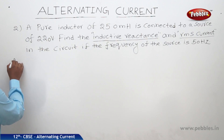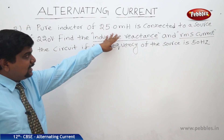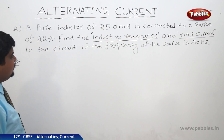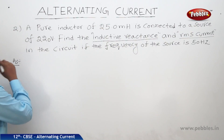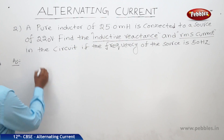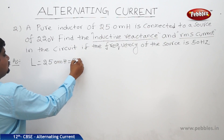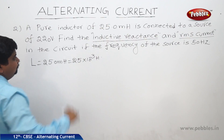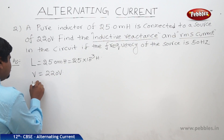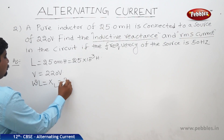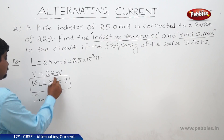Now we will look at a problem related to inductors. A pure inductor of 25 millihenry — that is 25 × 10⁻³ H — is connected to a source of 220 volts. We need to find the inductive reactance XL = ωL and the RMS current in the circuit, given that the frequency of the source is 50 hertz.